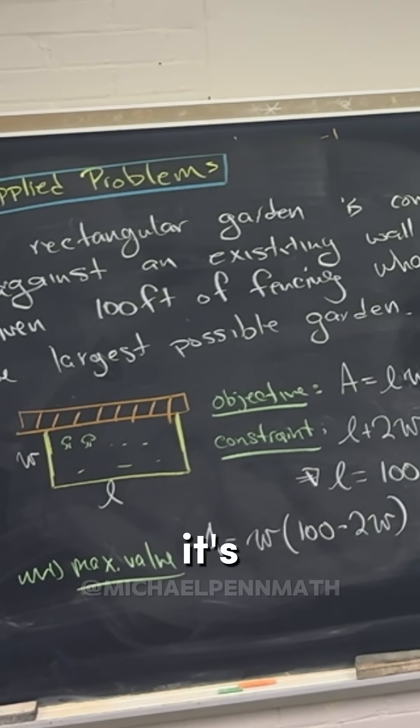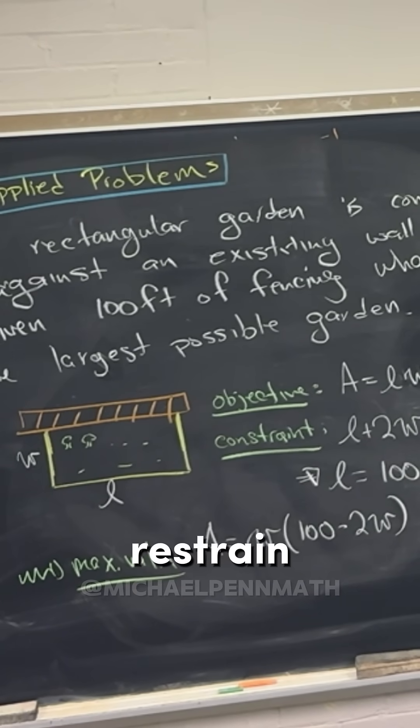I think that when it's possible to restrain the values of W, you should, just because that is always a little bit trickier and it's good to get some practice with that. So in this case, we can restrain the values of W.